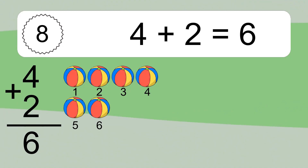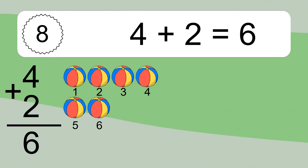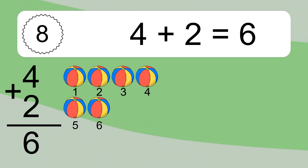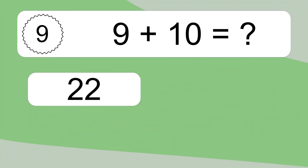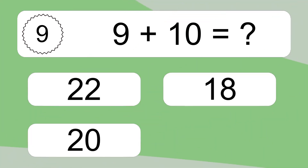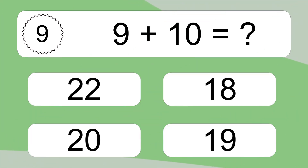Let's count it. 1, 2, 3, 4, 5, 6, 8, 9 plus 10 equals 16.